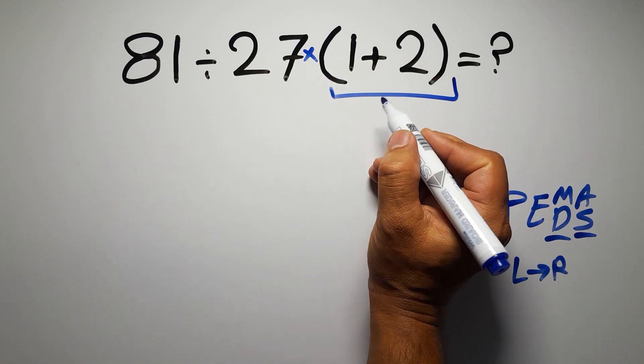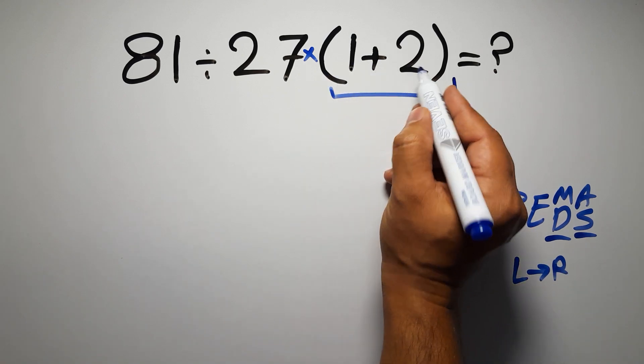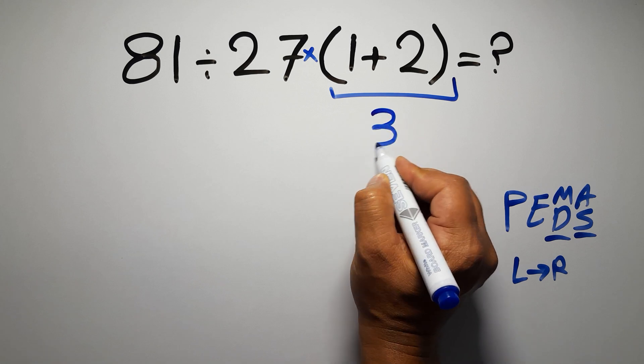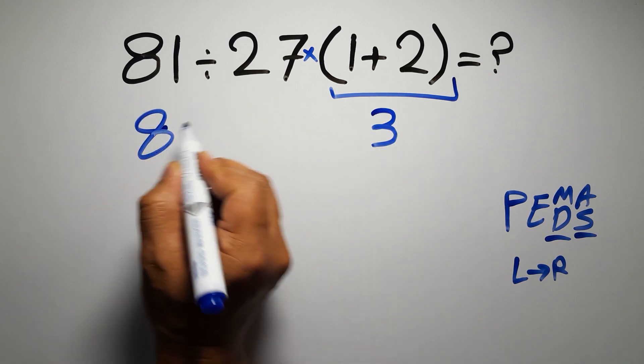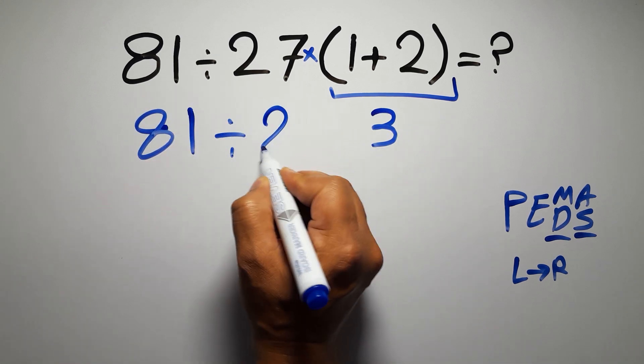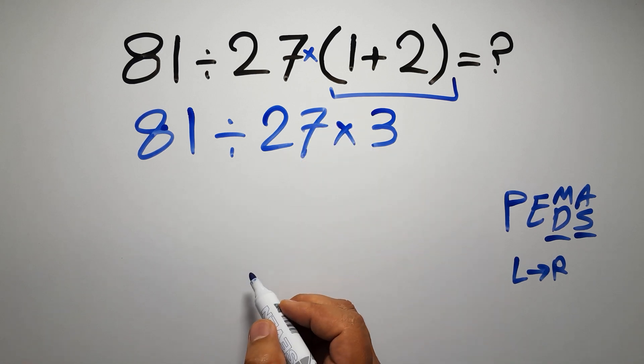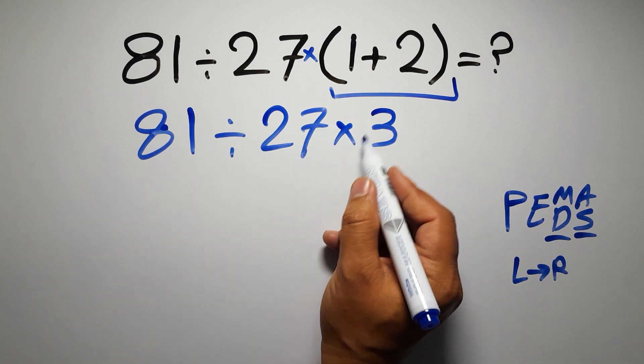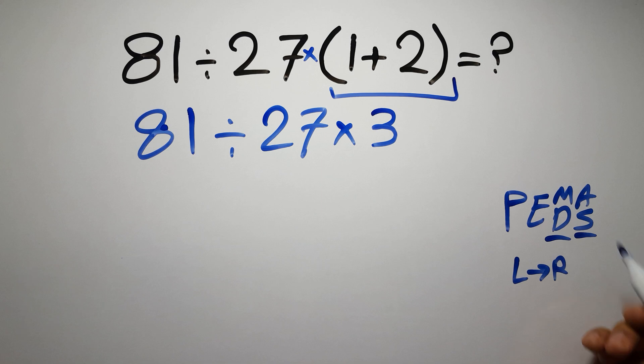Inside this parentheses we have 1 plus 2 which equals 3, so 81 divided by 27 then times 3. Now we have 1 division and 1 multiplication. As I said, multiplication and division have equal priority and we have to work from left to right.